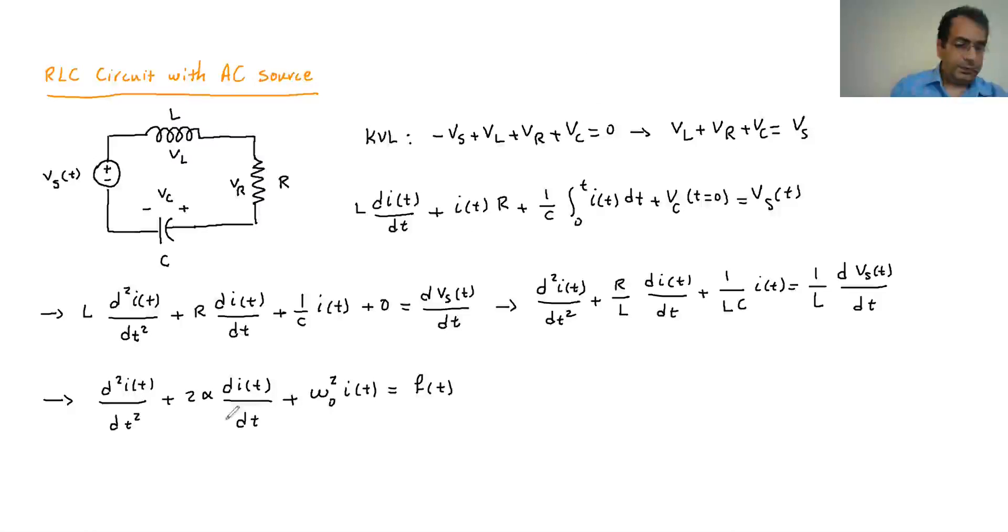And when we write it, we will say that in here we assume the α is gonna be R over 2L, and assume the ω₀ is gonna be 1 over square root of LC.